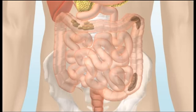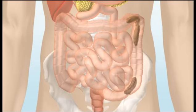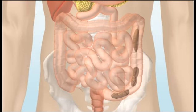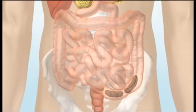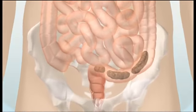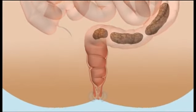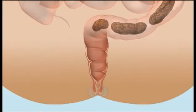The stool is then pushed through the intestine towards the rectum by a series of muscle contractions, known as peristalsis. You have three to four major peristaltic movements each day. The time it takes for food to pass through your digestive system is called the transit time. The average transit time for females is 2.4 days and 1.9 days for males.